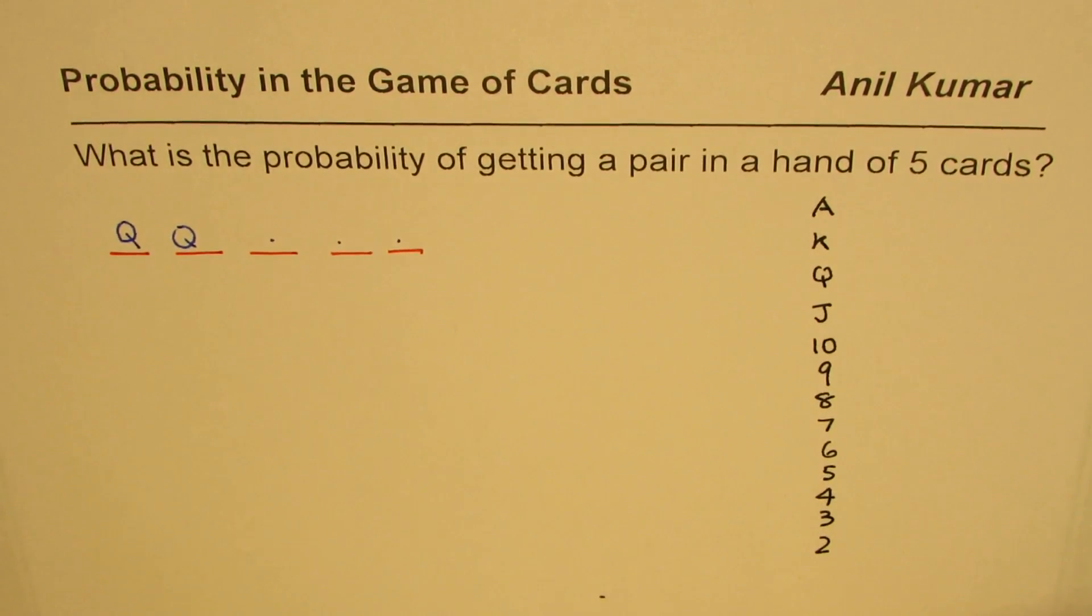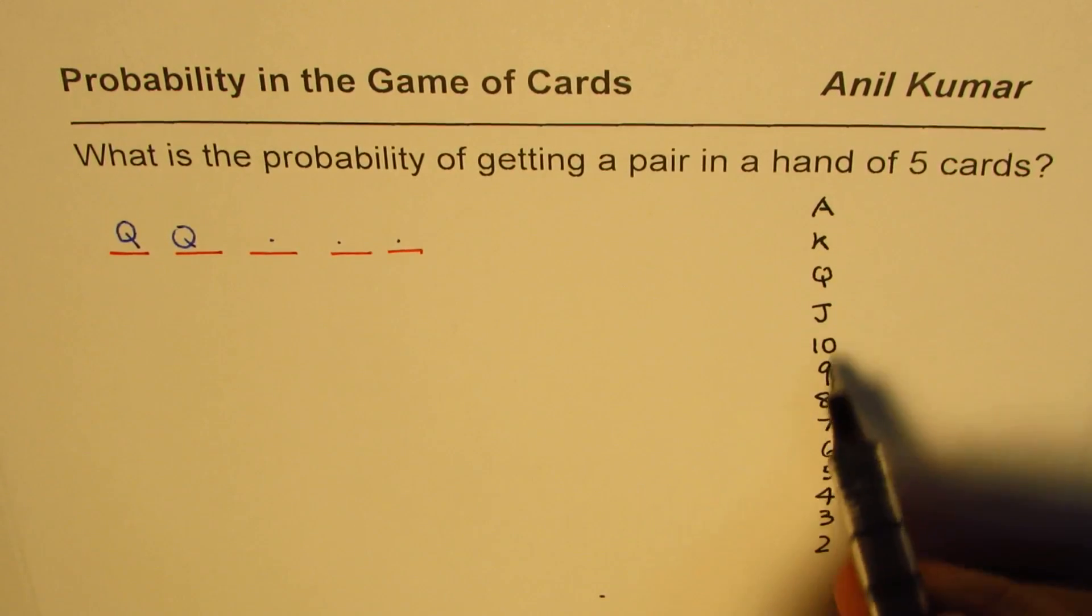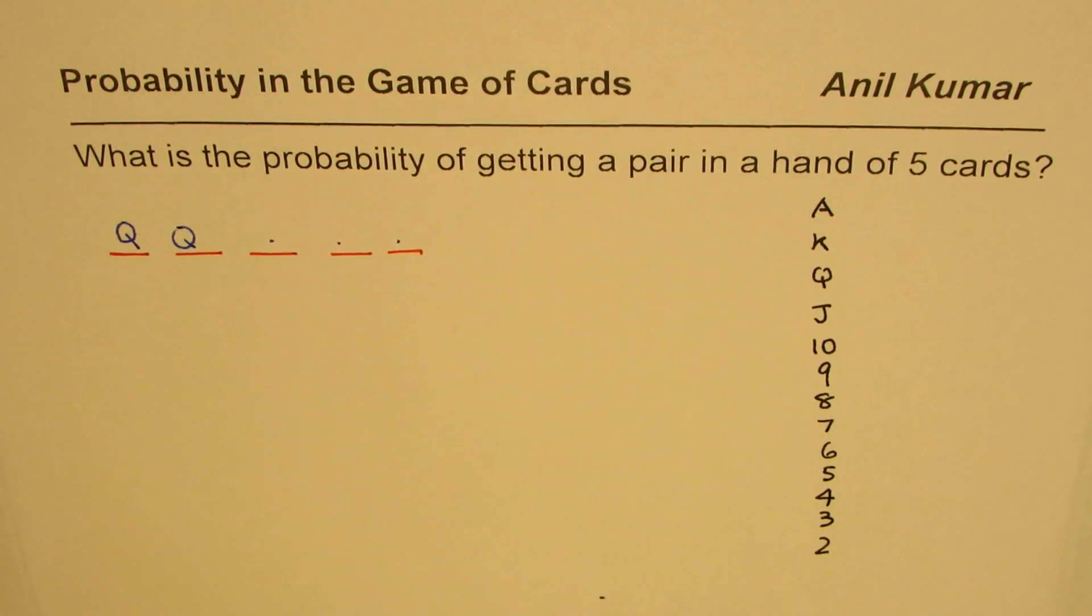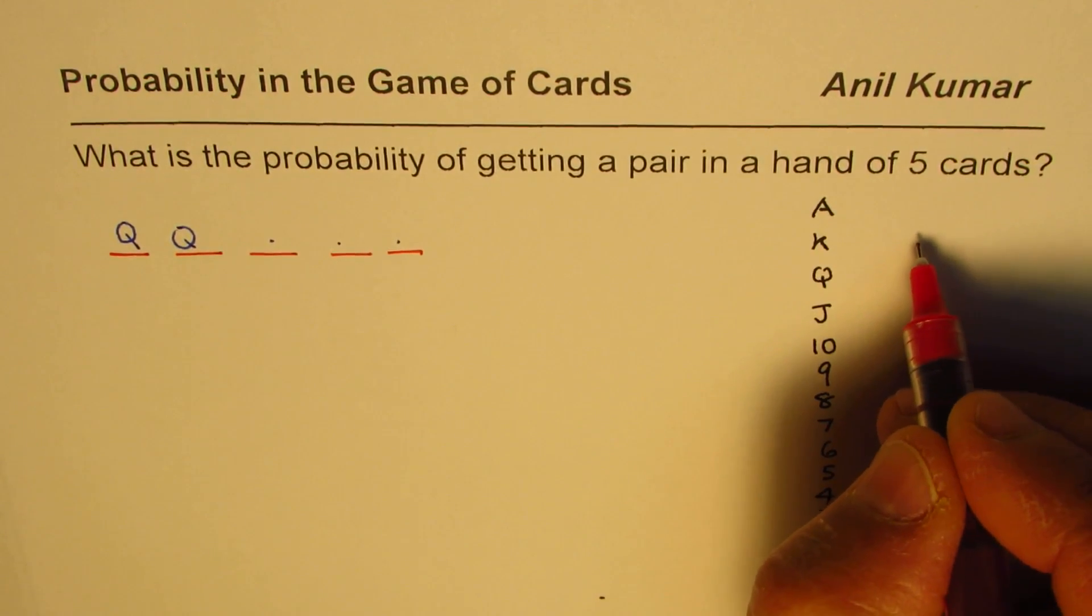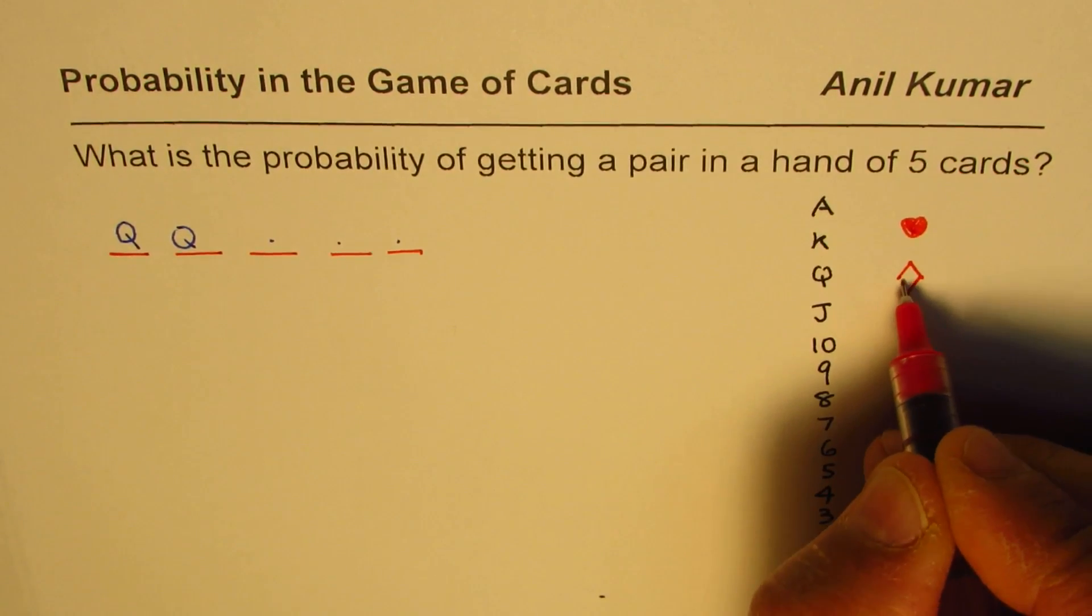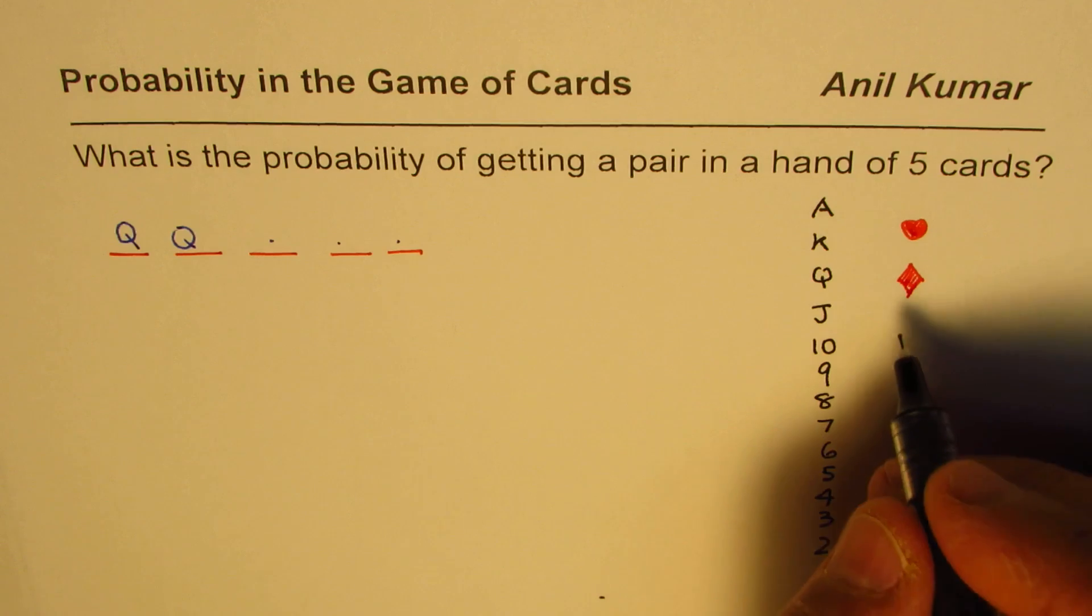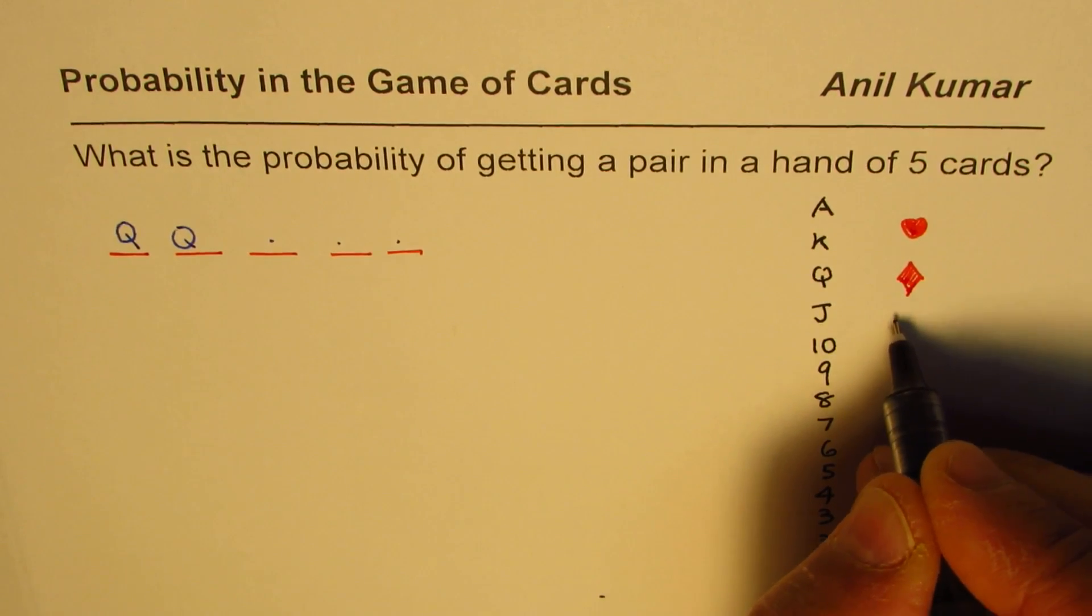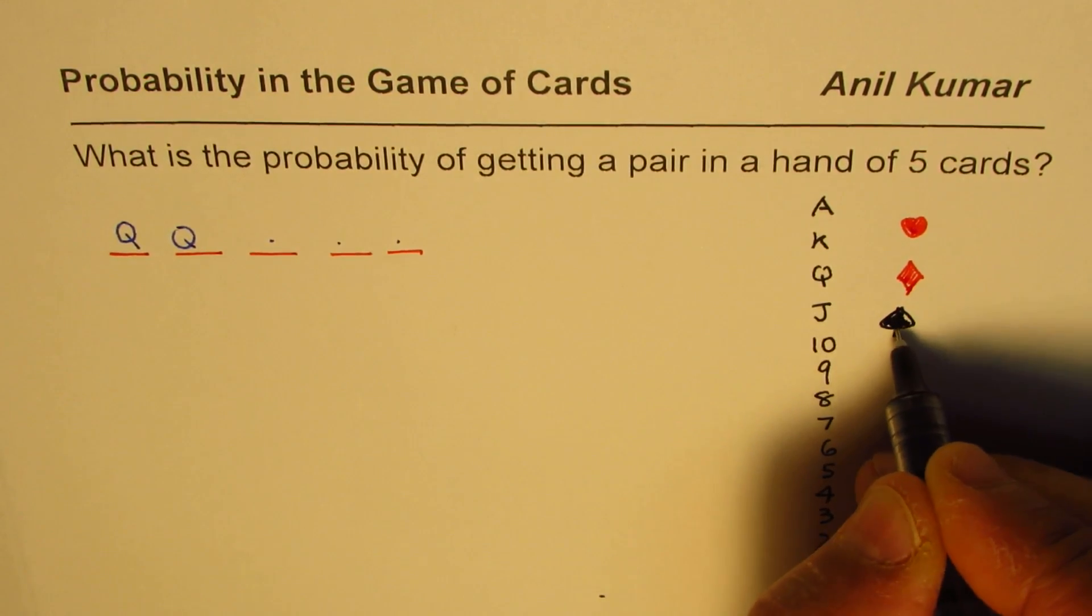These are 13 cards. When we say what is the probability of getting a pair, we want two of the same value. Each card could belong to one of four suits: hearts or diamonds, these are the two red suits, or it could be spades or clubs.